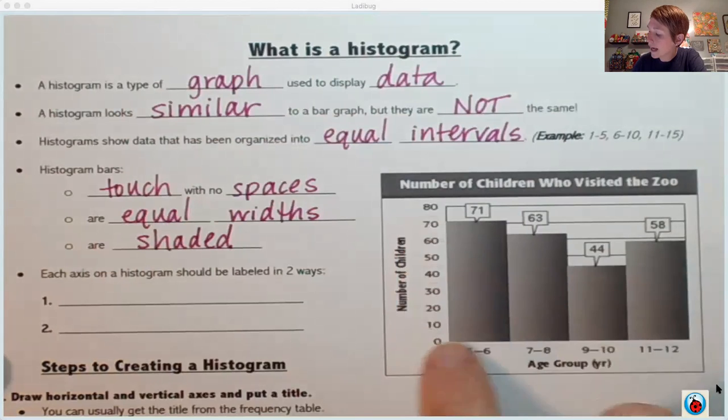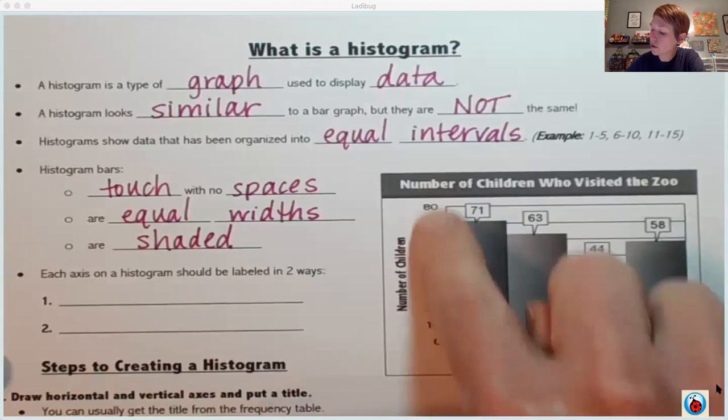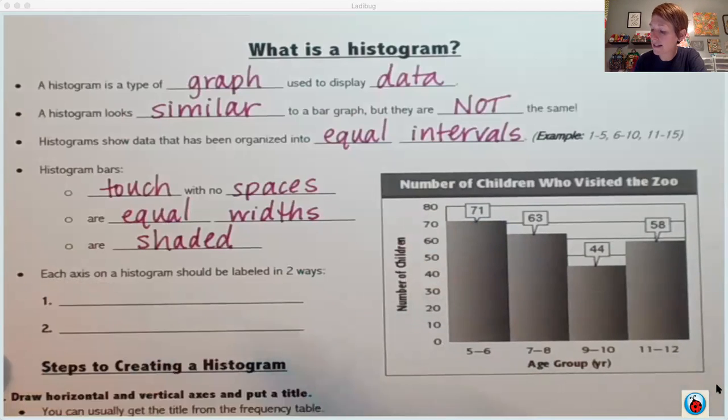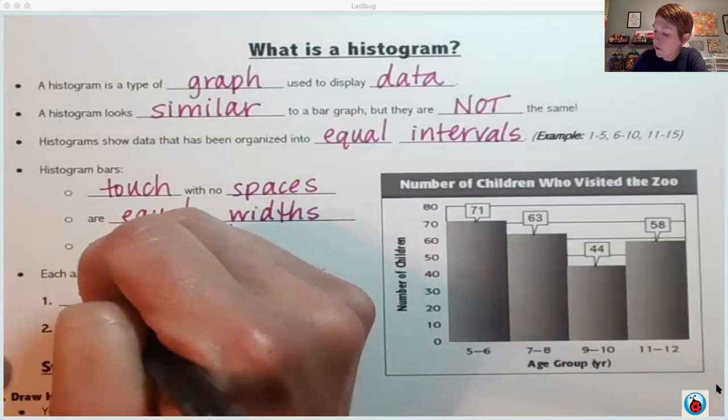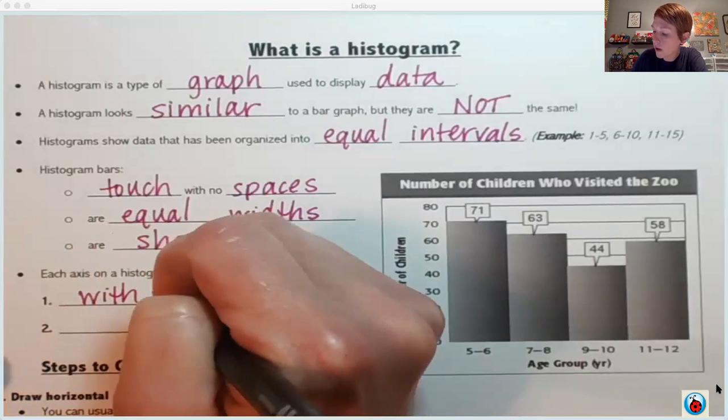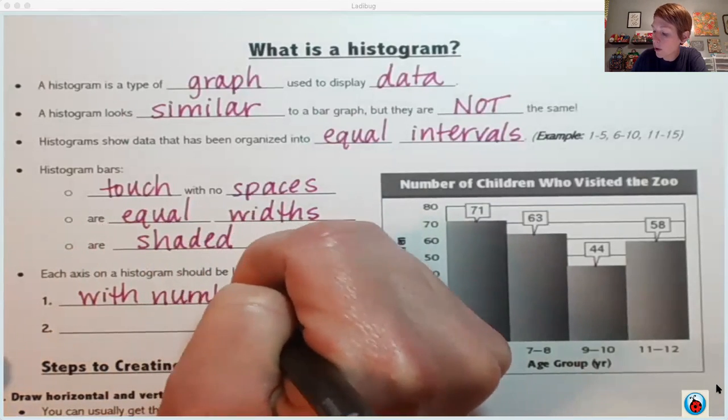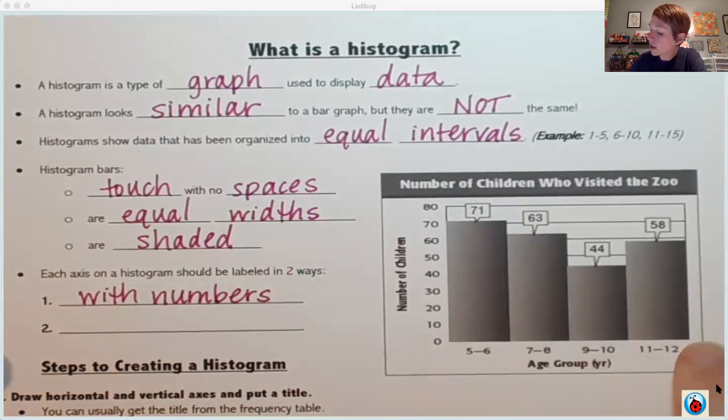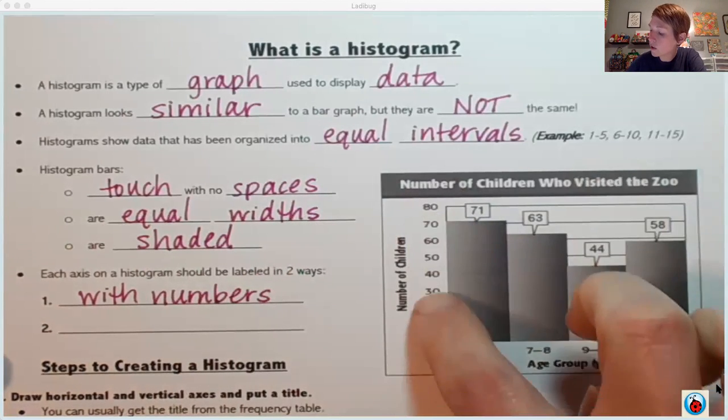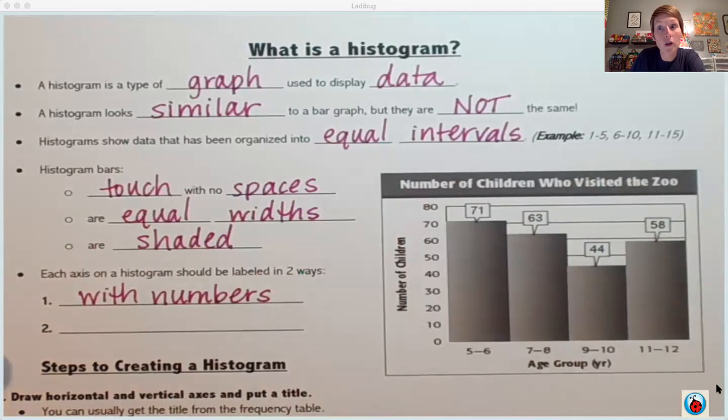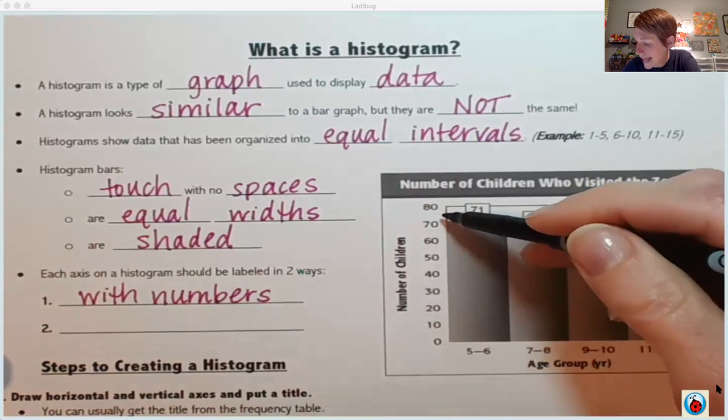Now let's talk about the outside of our histogram here. This is called the horizontal axis and this is called the vertical axis and each axis should be labeled in two ways. First up, with numbers. On the bottom is where you will put your interval numbers and on the side is where you will count up to wherever you need to count to to include all of your data.